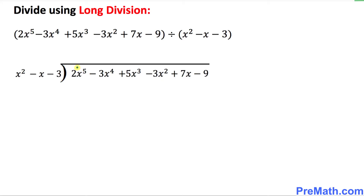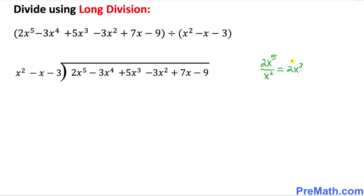First, look at the leading term of the dividend. We write down 2x⁵ divided by the very first term of the divisor, which is x². If we simplify, we get 2x³. This 2x³ goes on the top of our long division.